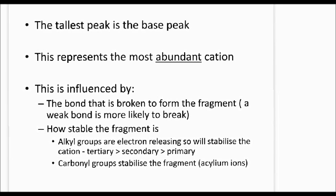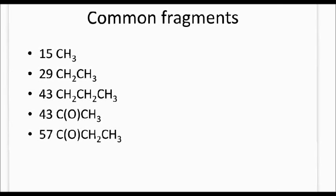Here are some common fragments you might find in a mass spectrum. A methyl group has a mass of 15, so you might find a peak at 15 or a loss of 15. An ethyl group (CH₂CH₃) gives a peak at 29. A propyl group gives 43. You can also see a fragment at 43 for C=O-CH₃, and at 57 for C=O with an ethyl group.